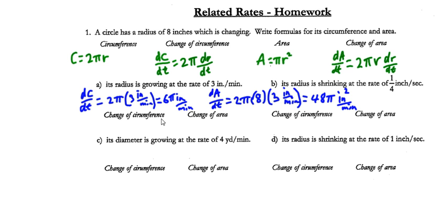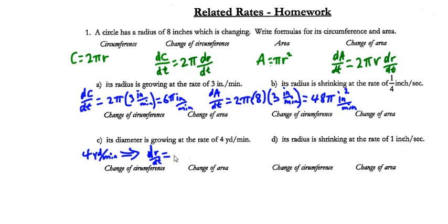For part b, the radius is shrinking, so we'll have a negative dR/dt. For part c with diameter, a diameter increase of 4 yards per minute is equivalent to a radius increase of dR/dt = 2 yards per minute — a little unit conversion to consider. Let's go on to problem 2.